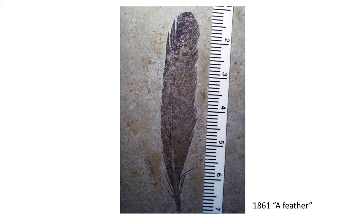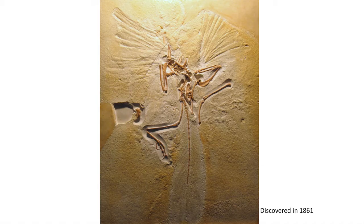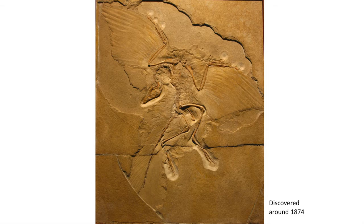The holotype of Archaeopteryx is an isolated feather discovered in 1861, but two of the most famous specimens were discovered in the late 1800s: the London specimen discovered in 1861, and the Berlin specimen discovered in 1874. Both of these discoveries were important and served a role in the early adoption of the theory of evolution, as advocated by Charles Darwin in 1859, and through new editions of his book On the Origin of Species.